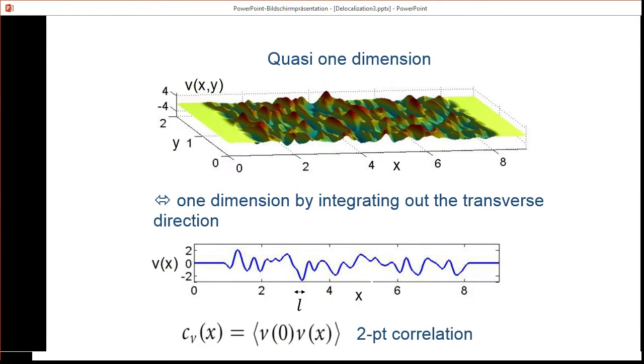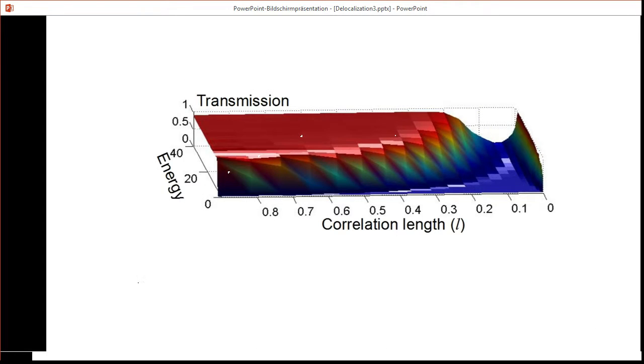In more detail, we can define a correlation function, a two-point correlation function, which characterizes that potential. The simplest form of a correlation function would be Gaussian, and in this case we can evaluate the transmission as a function of the energy and correlation lengths.